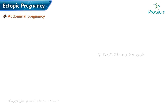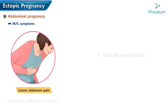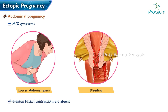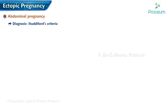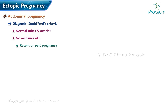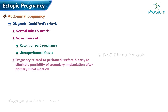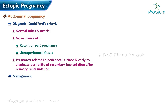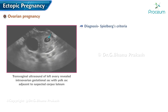Abdominal pregnancy: the most common symptom is lower abdominal pain and bleeding; Braxton Hicks contractions are absent. Studiford's criteria for diagnosis of primary abdominal pregnancy include: normal tubes and ovaries with no evidence of recent or past pregnancy, no evidence of uteroperitoneal fistula, presence of a pregnancy related exclusively to the peritoneal surface, and early enough to eliminate the possibility of secondary implantation. Management: surgery is the only treatment.